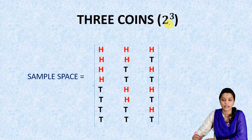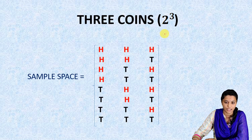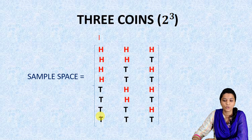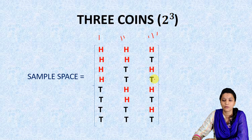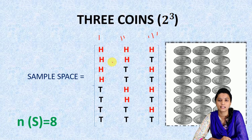For 3 coins, the sample space is 8. The outcomes include: 3 heads, 2 heads 1 tail, 1 head 2 tails, and 3 tails, in the respective rows. N(S) equals 8 for 3 coins. If we toss 4 coins, then 2 power 4 equals 16, so the sample space is 16.